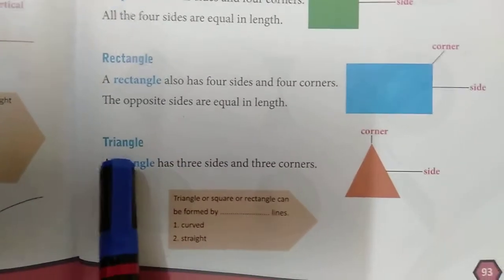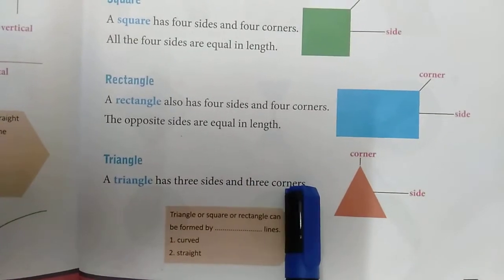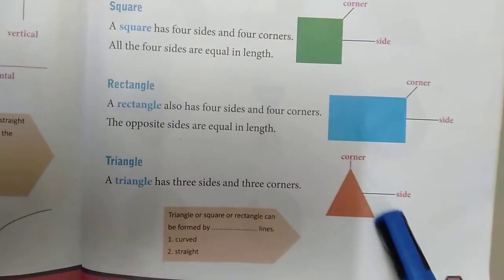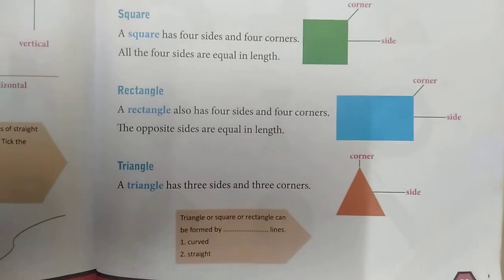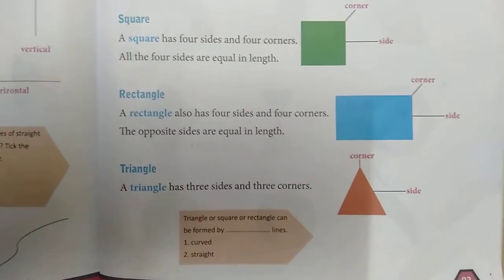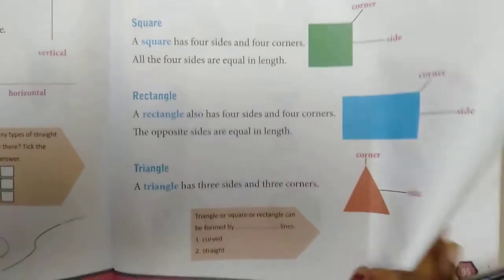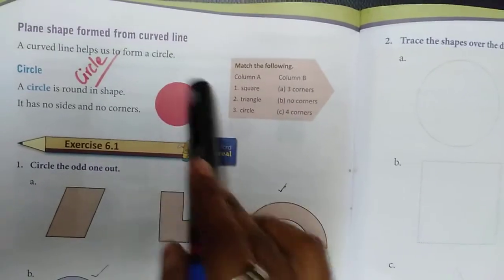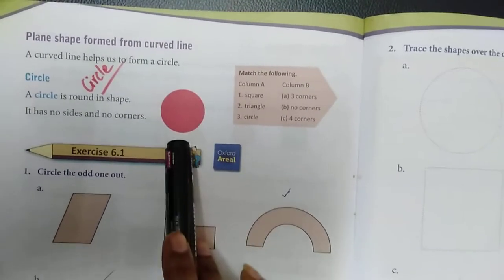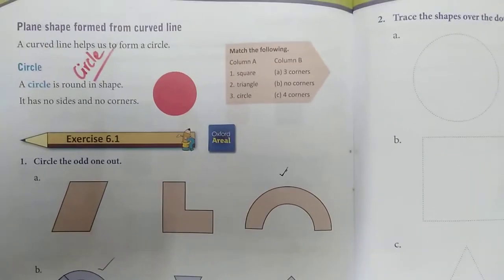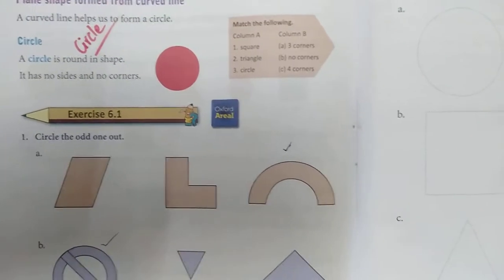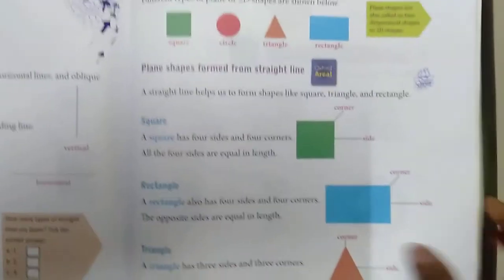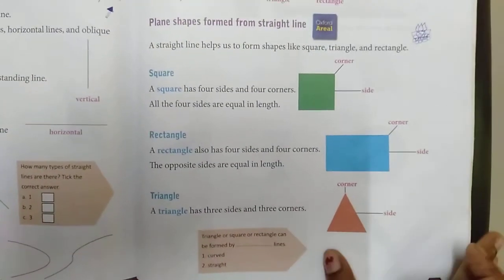Then triangle. A triangle has three sides and three corners. See here — this is a triangle: one, two, three sides and three corners. Then see the next one: circle. A circle is round in shape. It has no sides and no corners. You have to learn the shapes — how many sides, how many corners for each shape.